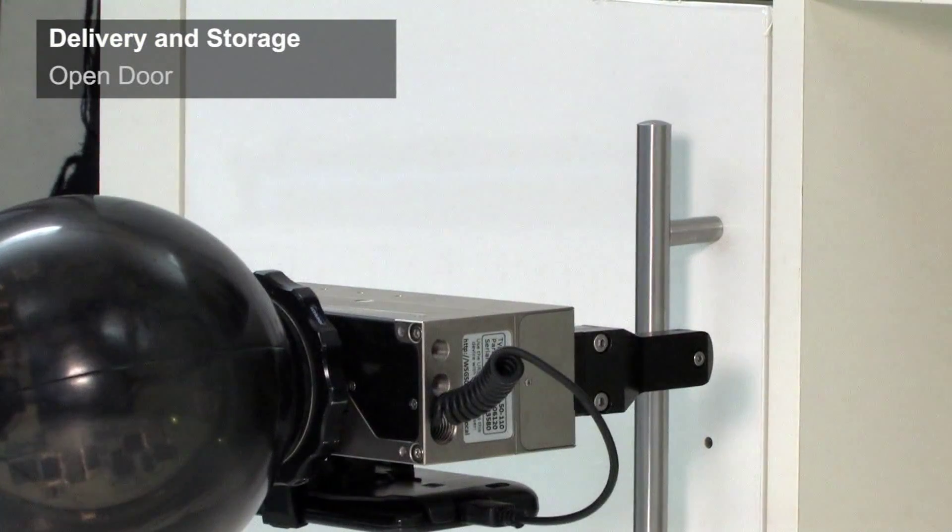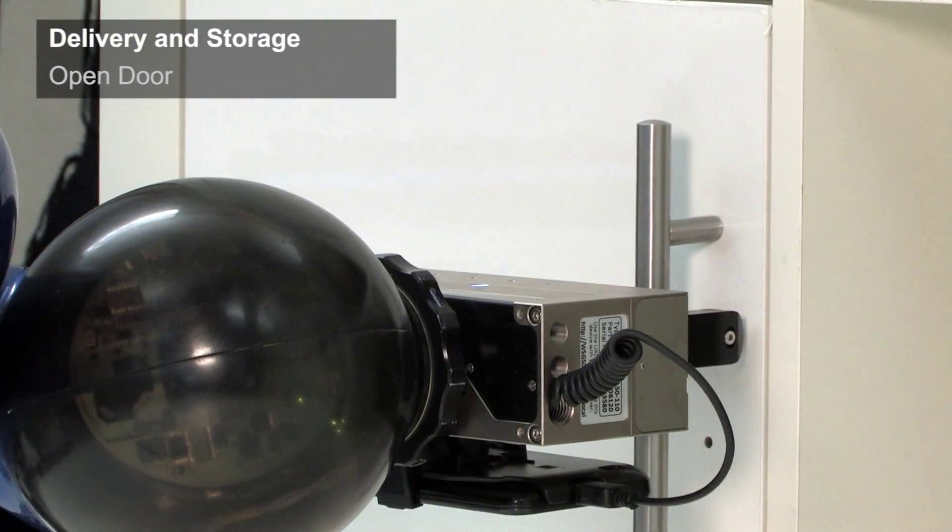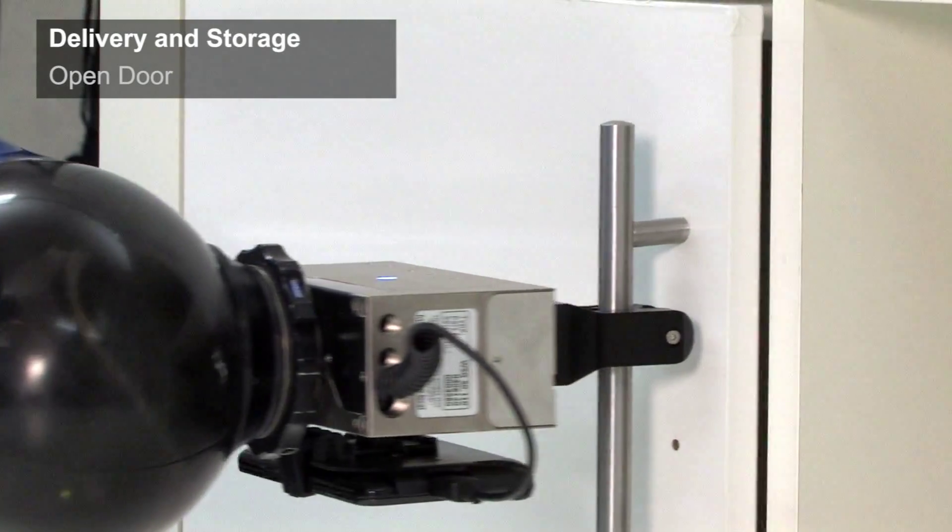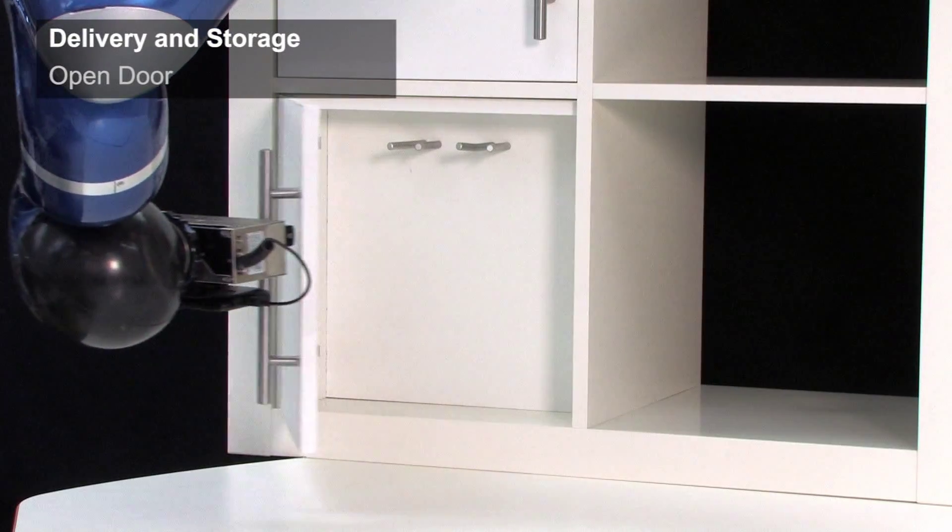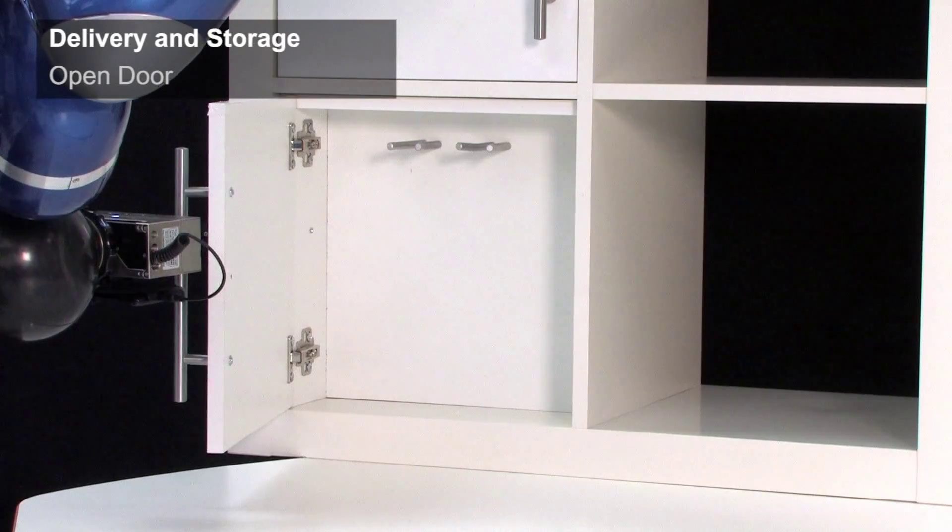Making robots as compliant as humans enables an otherwise stiff and clumsy machine to sensitively manipulate the world and open doors as easily as humans do.